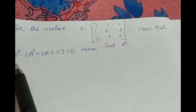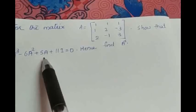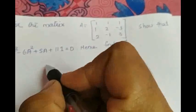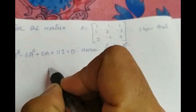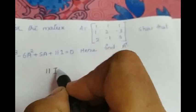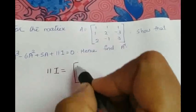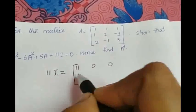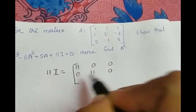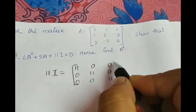So, first we have to show that A cube minus 6A square plus 5A plus 11I equal to 0. We will start with 11I. Since A is a 3 by 3 matrix, 11I will be 11, 0, 0, 0, 11, 0, 0, 0, 11.